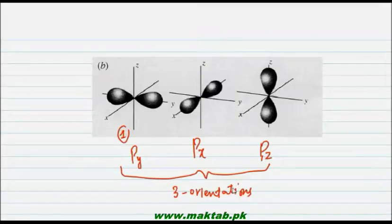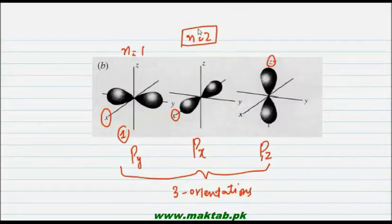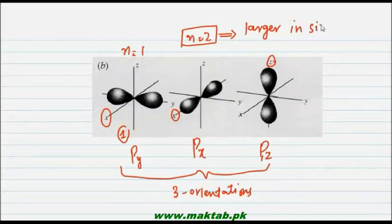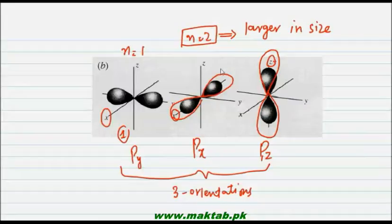So from this we understand that the geometry of P orbitals is the same, but the difference is only in their orientation — whether it is on x, y, or z. These are the geometries of the P orbitals. As n increases, the P sub-shell becomes larger in size. For example, the shape for n equals 1 will become bigger for n equals 2, and even bigger for n equals 3. As the principal quantum number increases, the size of the orbital increases, but its basic shape remains the same.